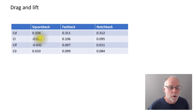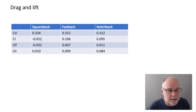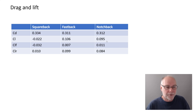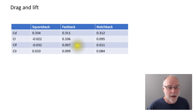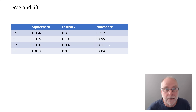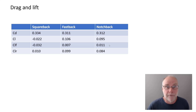What about coefficient of lift? The squareback overall has a negative coefficient of lift — it is developing downforce. The fastback has significant lift at 0.106. And the notchback has significant lift, but a little bit less than the fastback. Breaking that down into front and rear: the squareback at the front is developing downforce but at the back is developing a little bit of lift. The fastback is developing a little bit of lift at the front and a lot more lift at the back. The notchback is similar — a little bit of lift at the front and a lot more lift at the back. And remember, it's rear lift which really governs car stability.